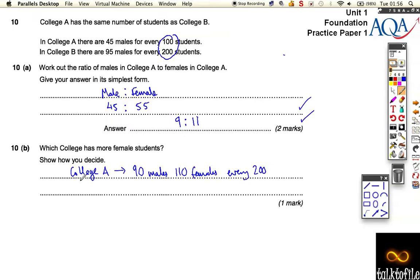And if we look at College B, you've got 95 males, which means you've only got 105 females for every 200.